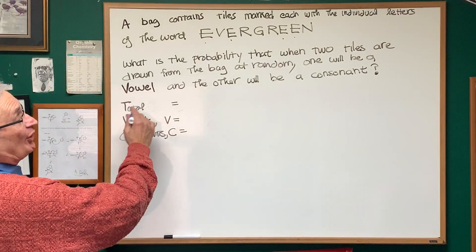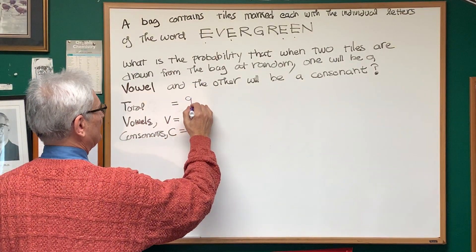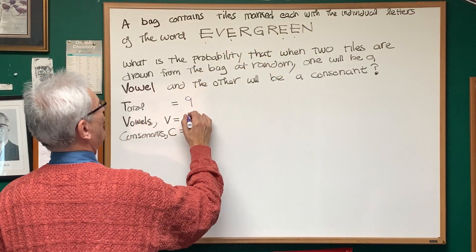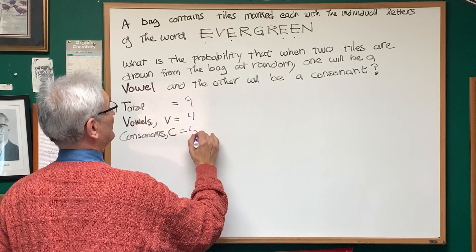First, let's look at the total number of letters in the word evergreen, which is nine, and the total number of vowels is five, and therefore the total number of consonants is five.